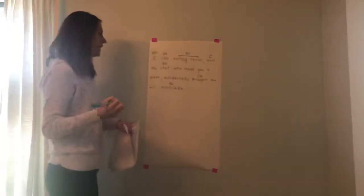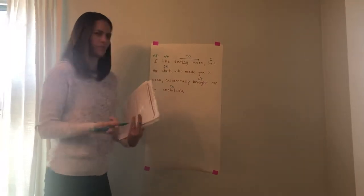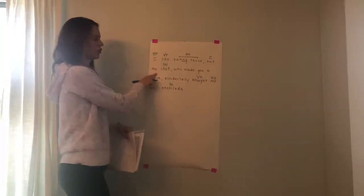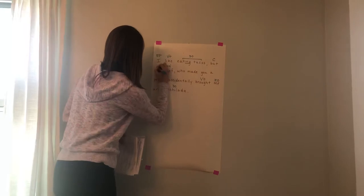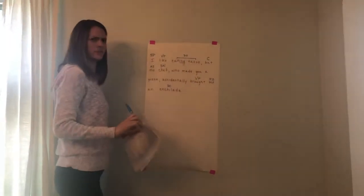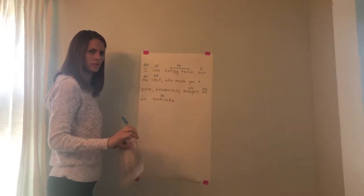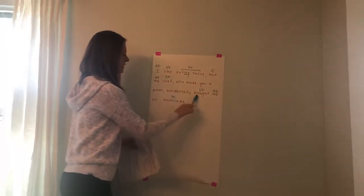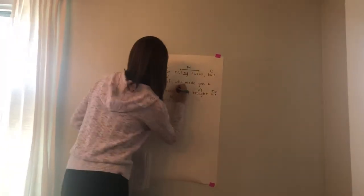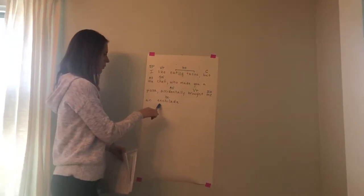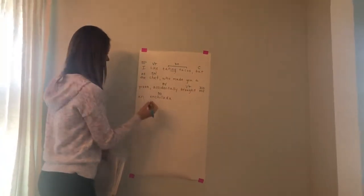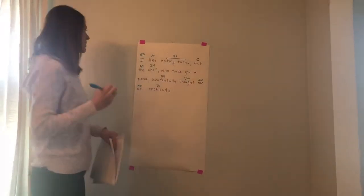Who is receiving the enchilada? Me — indirect object. Which chef? The — adjective, article adjective. How was it brought? Accidentally — is that an adverb? It is, because it is modifying our verb 'brought' and answering the question 'how.' Which enchilada? An enchilada — 'an' is an adjective, another article adjective.